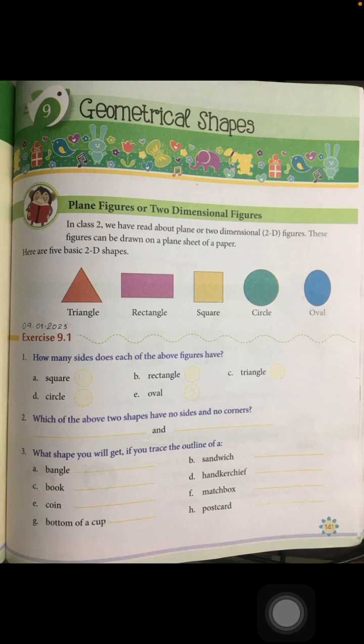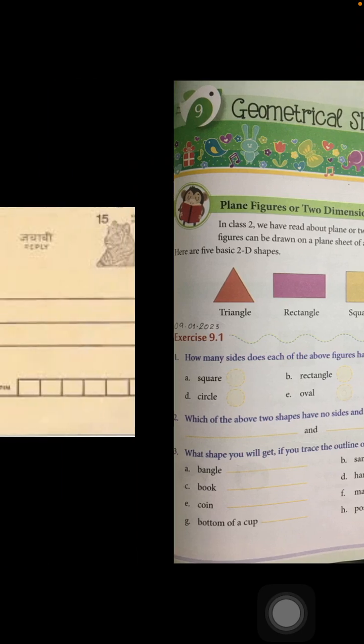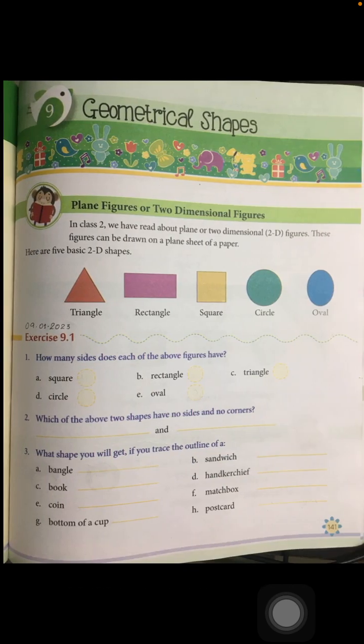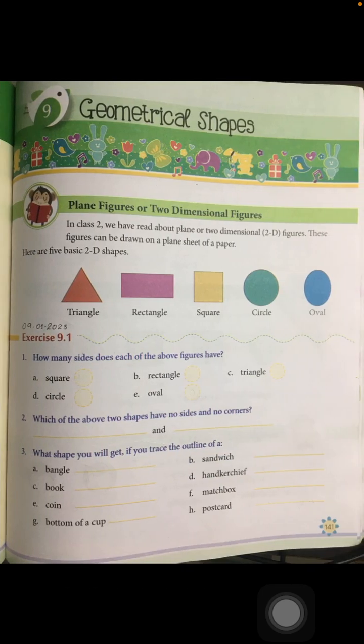Likewise, you will find out the shape of the matchbox, the bottom of a cup, and the postcard. If you have not seen one, this is a postcard. Which shape is it? It is a rectangle because the two opposite sides are equal. In a square, all sides are equal, whereas in a rectangle, opposite sides are equal.